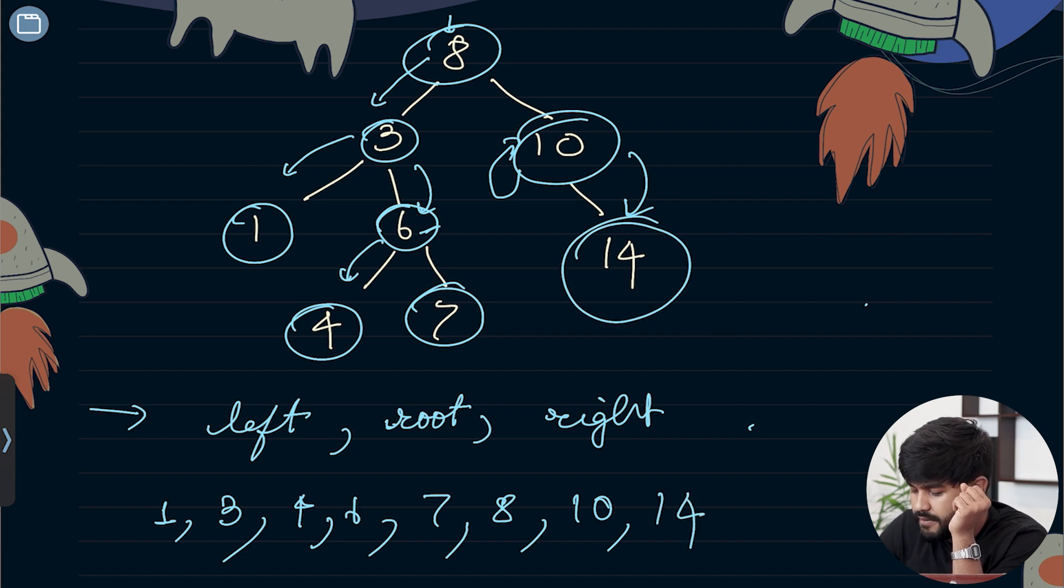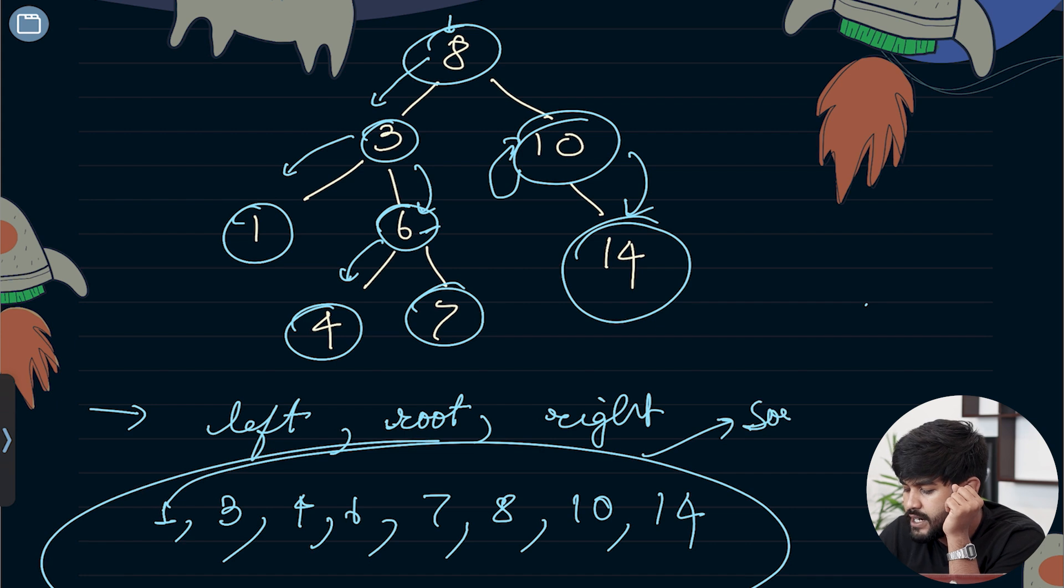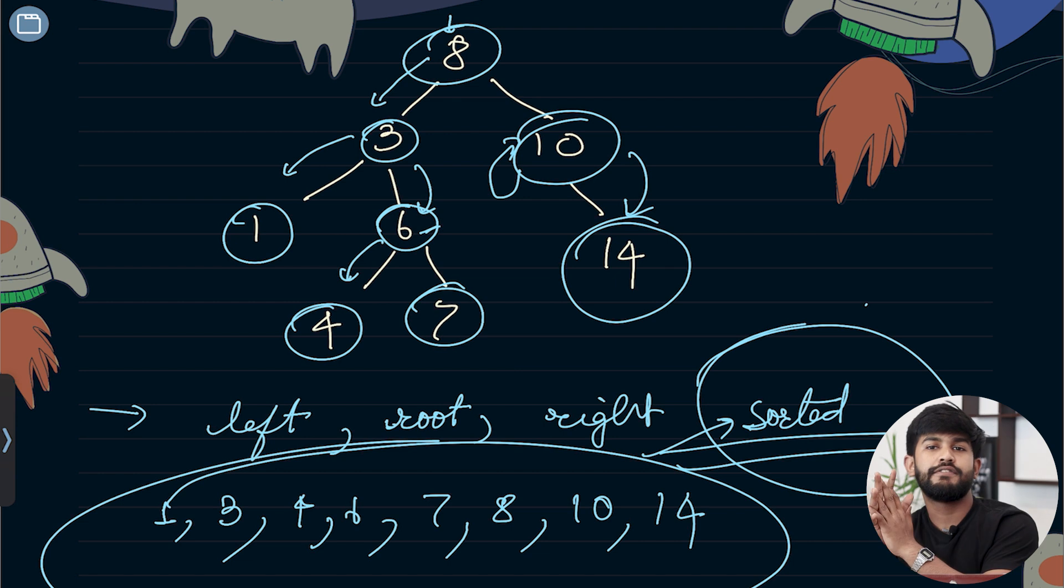If you observe, we have a sorted result. This is an observation. Learn this by heart: in-order traversal of BST produces a sorted result. And 8 out of 10 questions of BST would be a cakewalk for you.